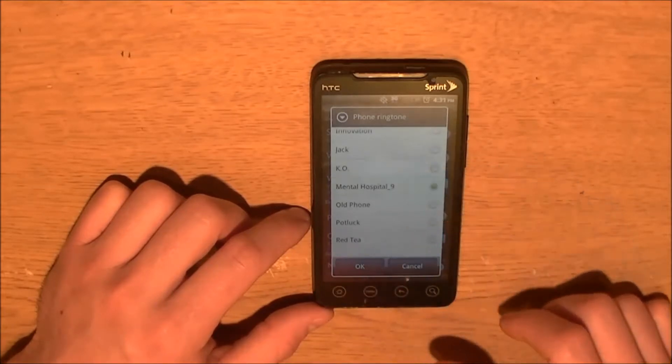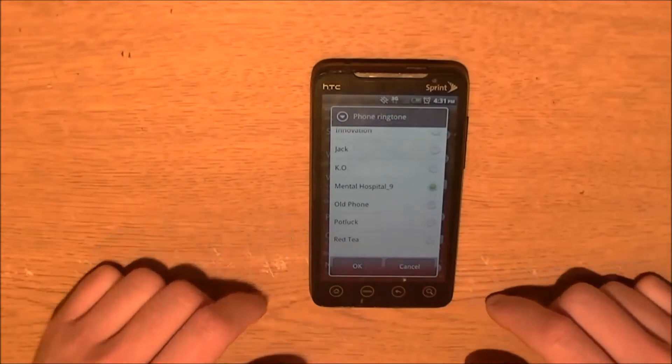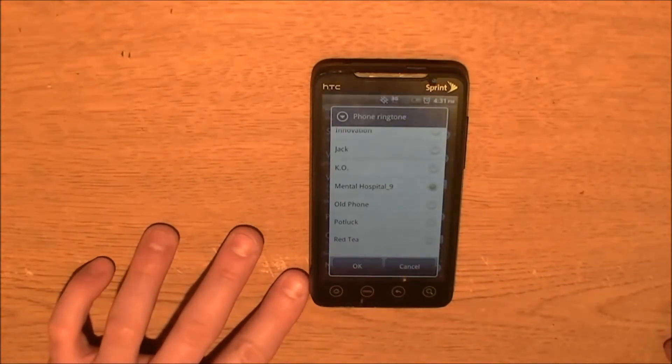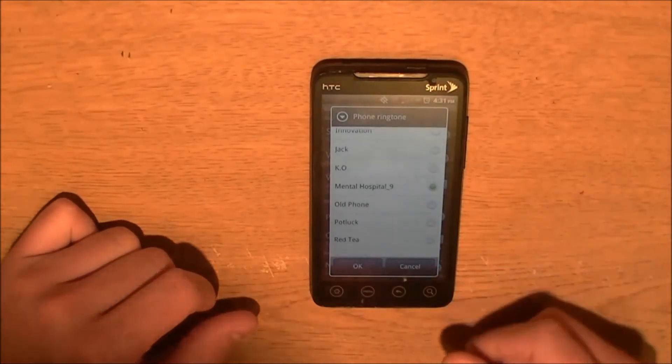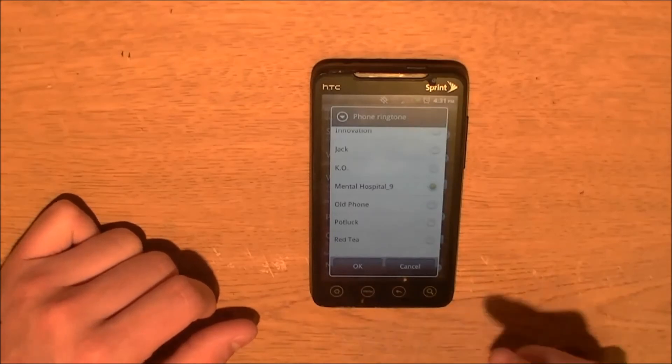Welcome to the mental health hotline. If you are obsessive compulsive. Press one repeatedly. If you are codependent. Ask someone to press two for you. If you have multiple personalities. Press three, four, five, and six. If you are paranoid. We know what you are and what you want. Stay on the line. We'll trace your call. If you're delusional. Press seven. Then your call will be transferred to the mothership. If you are schizophrenic. Listen carefully. The small voice will tell you which number to press. If you are depressive. It doesn't matter which number you press. Yeah. I figured I'd play that one. That's pretty funny. But you guys get the point. And everything works great.